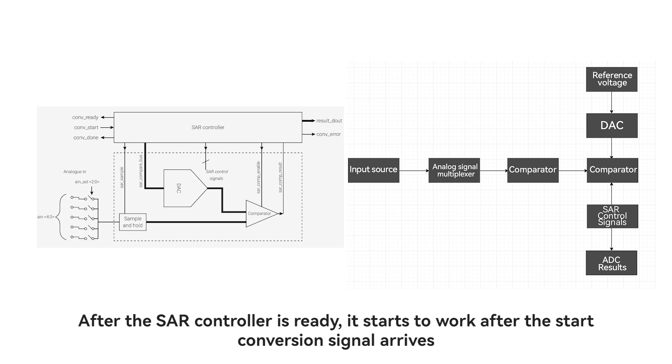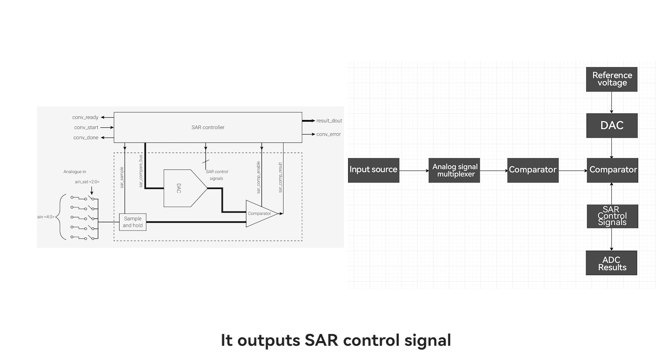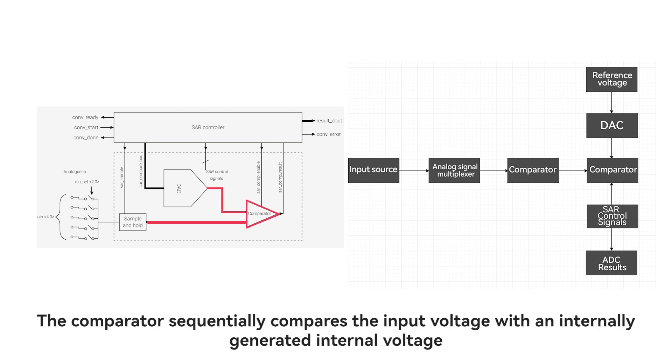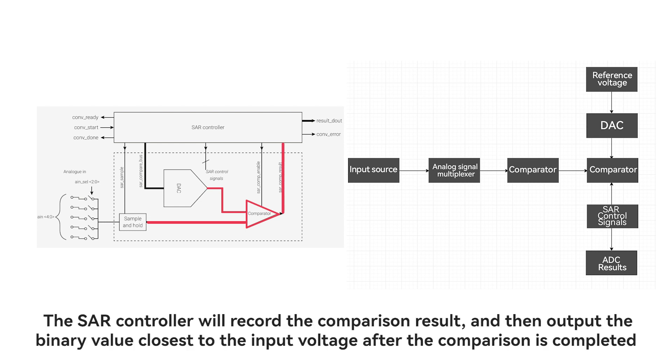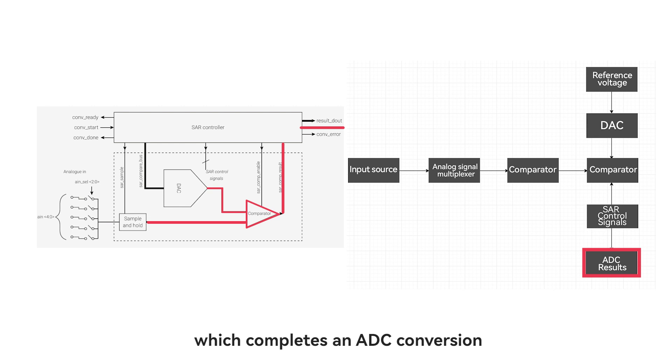After the SAR controller is ready, it starts to work after the start conversion signal arrives. It outputs SAR control signal. The comparator sequentially compares the input voltage with an internally generated voltage. The SAR controller will record the comparison result and then output the binary value closest to the input voltage after the comparison is completed, which completes an ADC conversion.